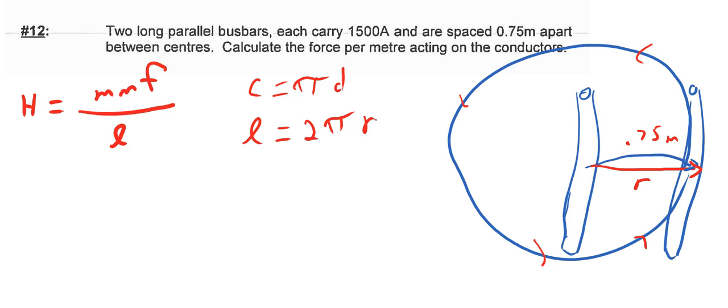Now in addition to that, the MMF is equal to the number of turns or the number of conductors multiplied by the current. Well here we are considering just a single conductor and the force that it exerts on the other conductor.